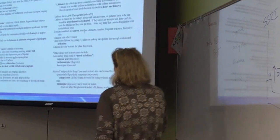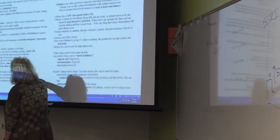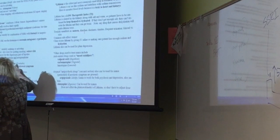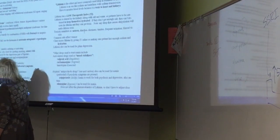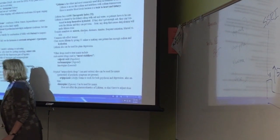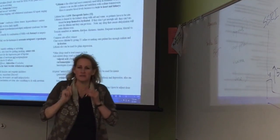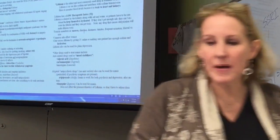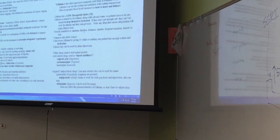Some of the drug name endings are the same, which can help: -zotine appears in some SSRIs, and -faxine appears in the SNRIs. You don't have to memorize everyone, just have an idea of it.